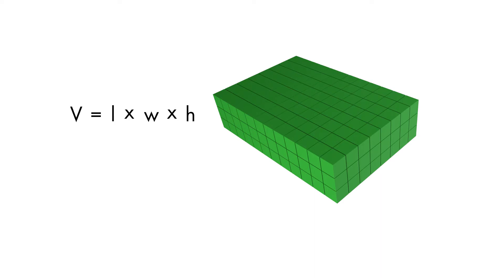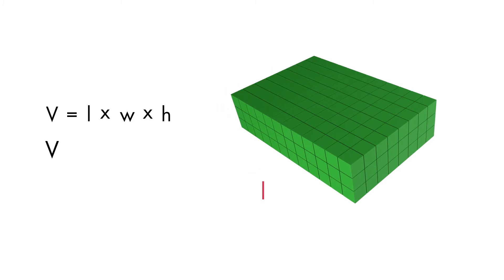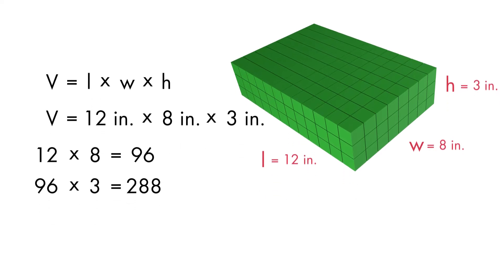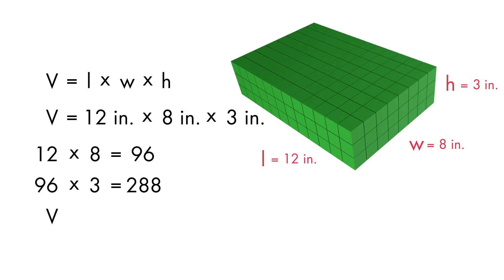To find the volume of this shape, we write the equation Volume equals 12 inches times 8 inches times 3 inches. 12 times 8 is equal to 96. 96 times 3 is equal to 288. So, the volume of the first shape is 288 cubic inches.